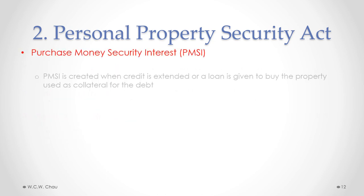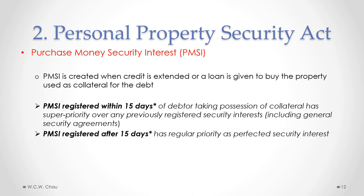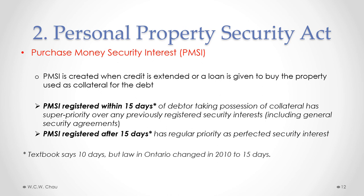A purchase money security interest, or PMSI, is created when credit or a loan is extended to buy the property used as collateral for that debt — so the loan was used to buy the thing being used as collateral. If a PMSI is registered within 15 days of the debtor taking possession of the collateral, that PMSI has what we call super priority over any previously registered security interests, including a general security agreement — even over interests registered before the PMSI. A PMSI registered after the 15-day period has only regular priority as a perfected security interest.